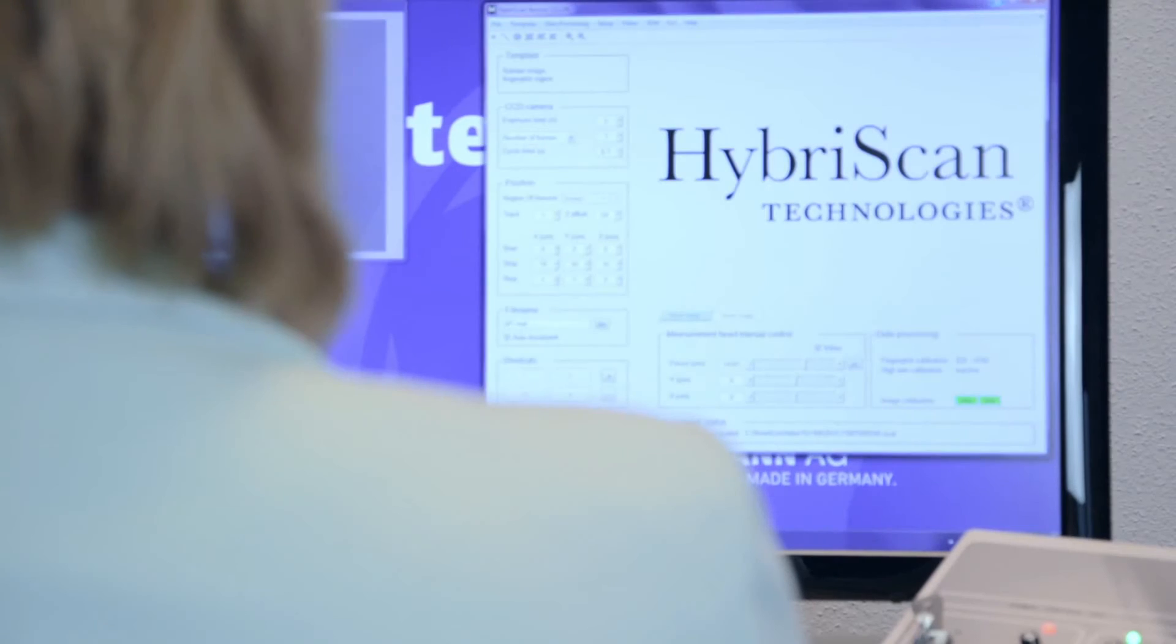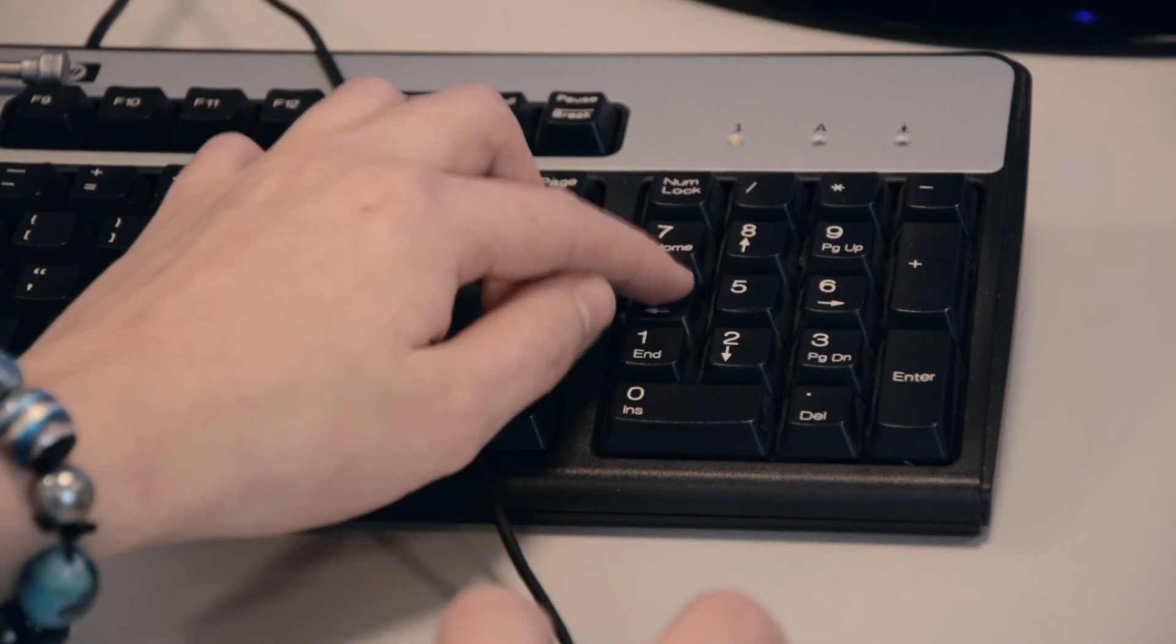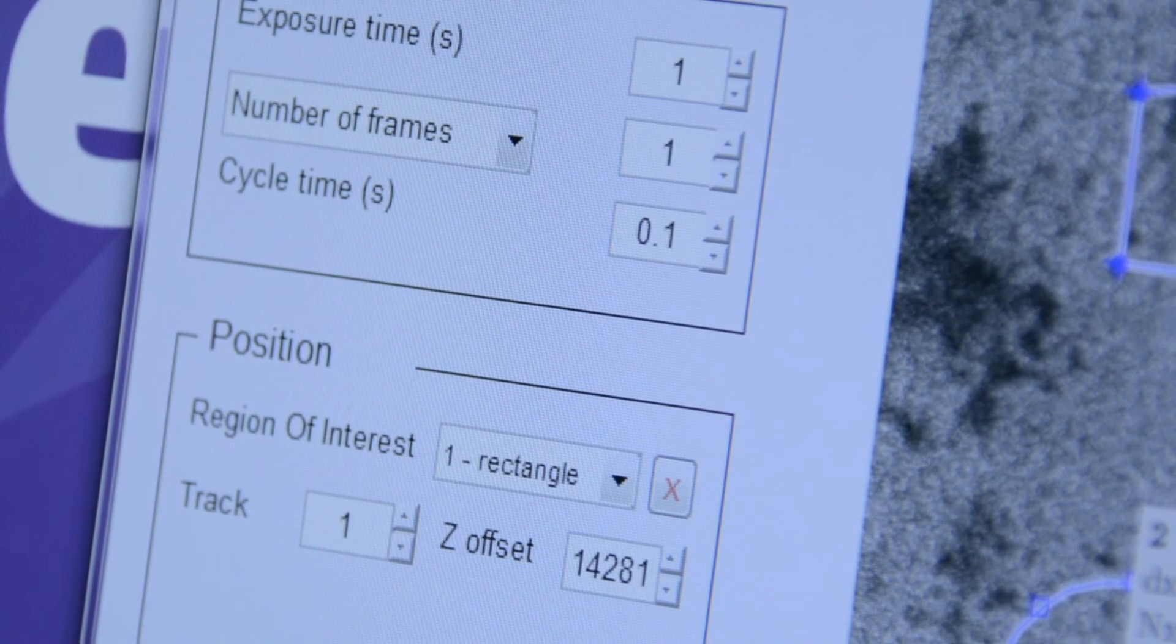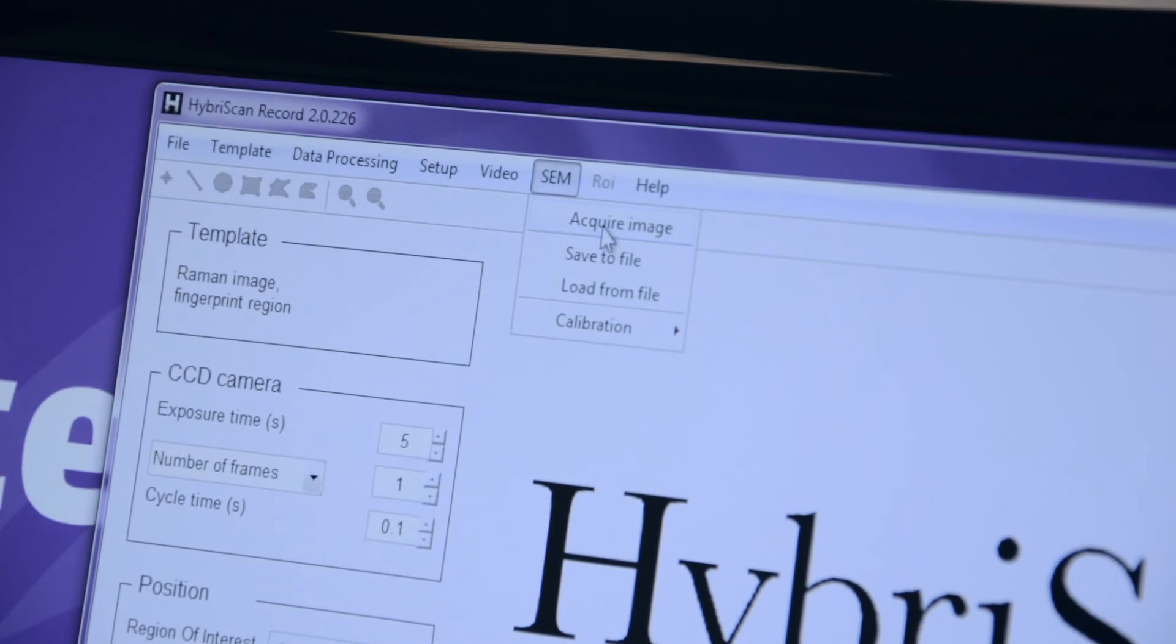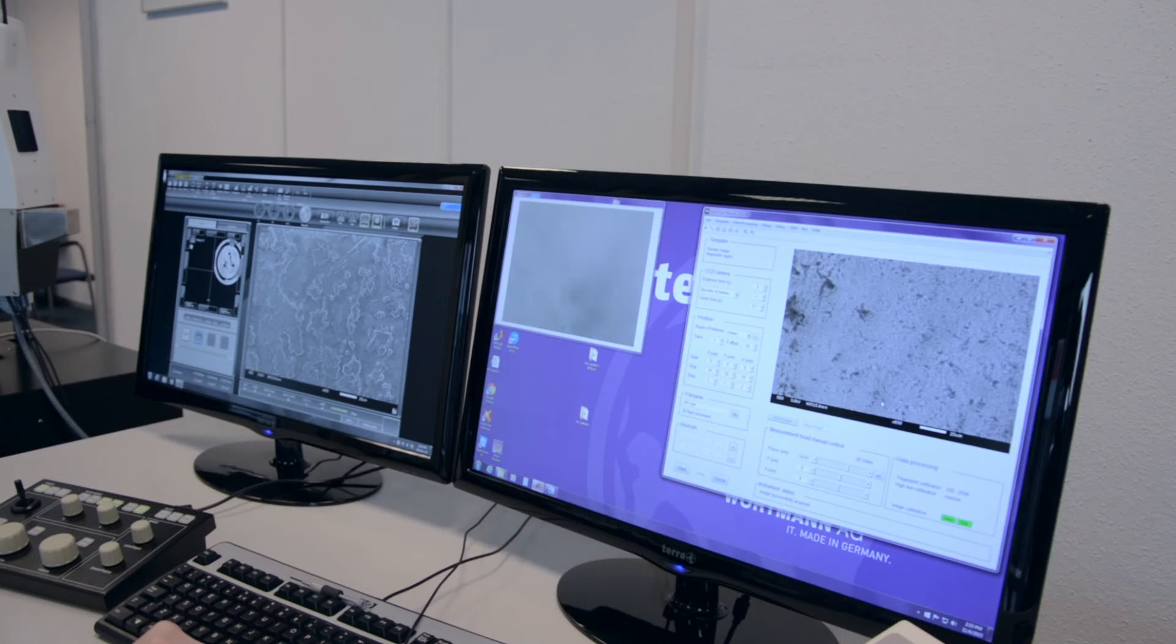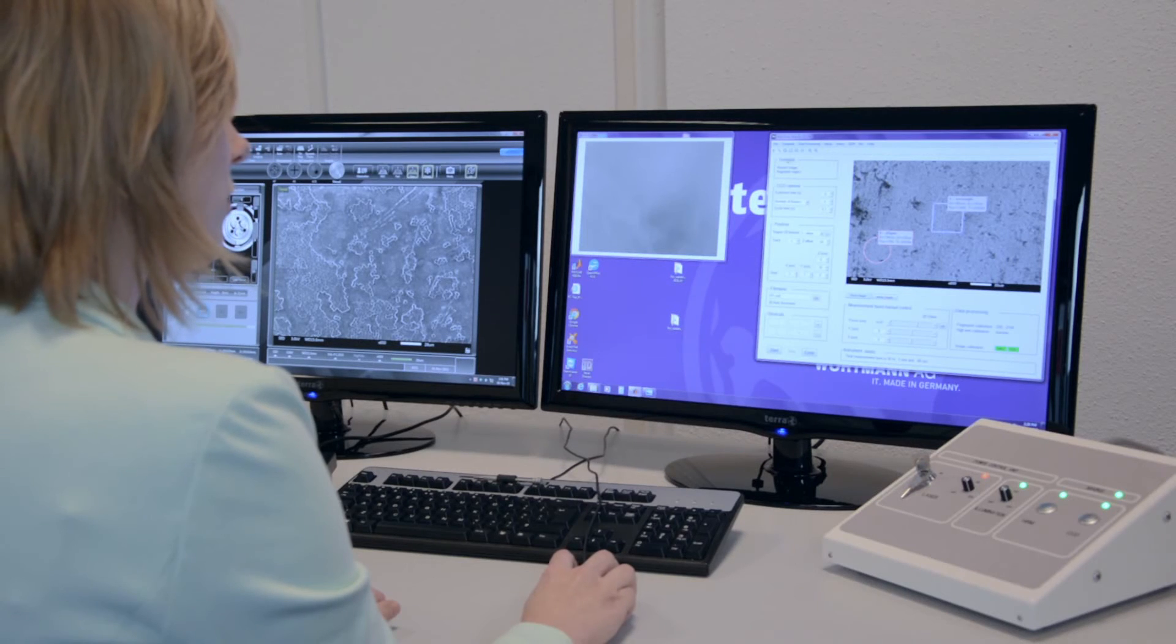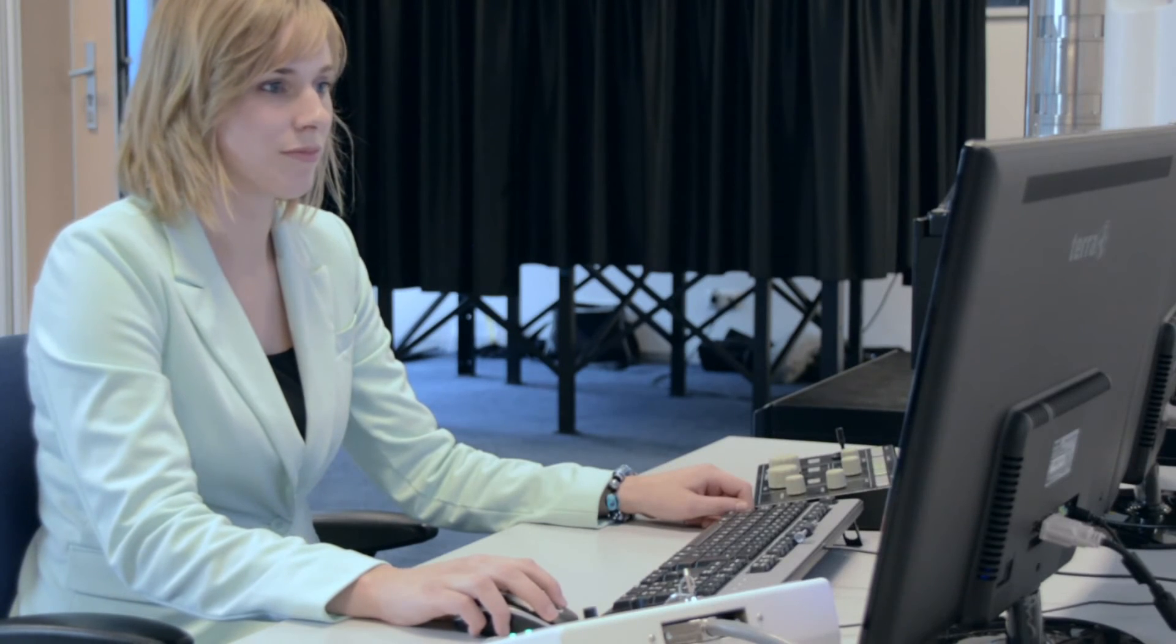The Raman spectrometer is controlled from the Hyberscan Record user interface. All settings for spectroscopy and Raman imaging can be adjusted there. In the Hyberscan Record program, any previously acquired SEM image can be loaded. Regions of interest for Raman imaging can be selected in this SEM image. The menu enables selection of different shapes and multiple regions of interest with user-defined sizes.